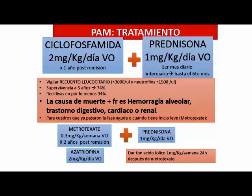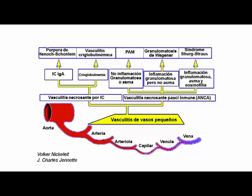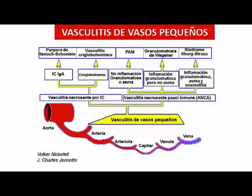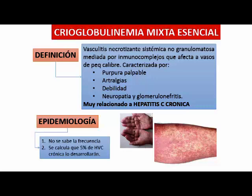Ahora vamos hacia el paciente con púrpura de Schönlein-Henoch, en estas vasculitis de pequeños vasos. La crioglobulinemia mixta esencial está mucho más asociada a enfermedades de fondo, enfermedades con hepatitis C crónica. La crioglobulinemia es una vasculitis necrotizante que se caracteriza por púrpura palpable, dolores articulares, debilidad y neuropatía, mononeuritis múltiple también.